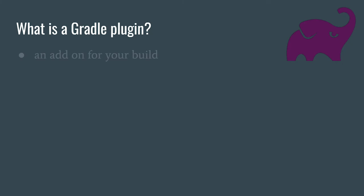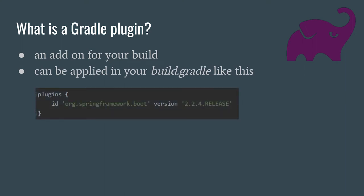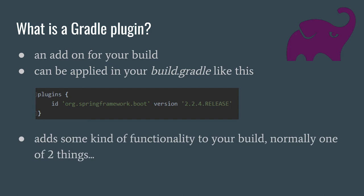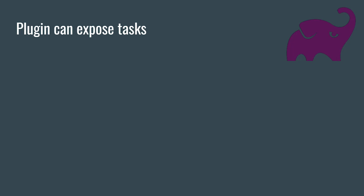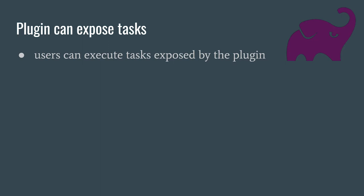A Gradle plugin is essentially an add-on for your build that adds some additional functionality, and it can be applied in your build.gradle using the plugins DSL, where you can apply plugins which have a particular ID or version. It adds some kind of functionality to your build, and normally it's one of two things. First up, plugins can expose tasks, which allow users to execute things exposed by the plugin.